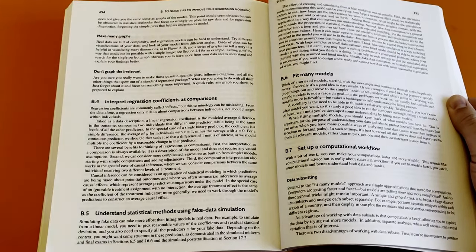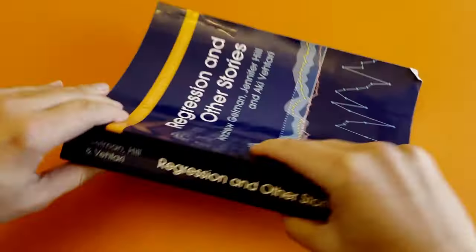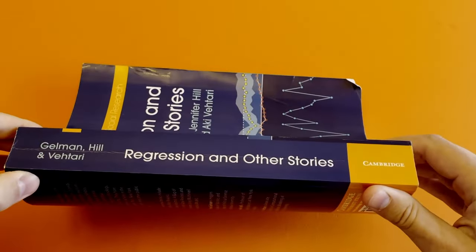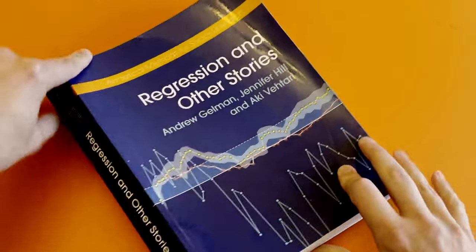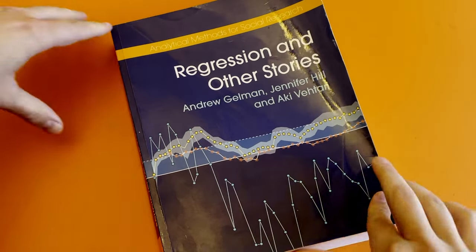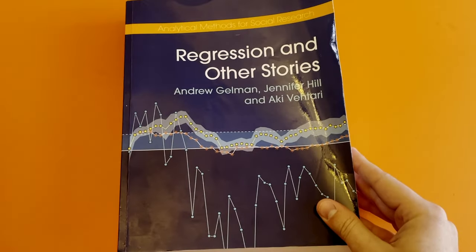In summary, Regression and Other Stories by Andrew Gelman is an essential desk reference for practitioners. It provides a comprehensive understanding of regression, benefiting even those working on non-regression models. This book is a must-have for every data scientist, enhancing efficiency and proficiency in data utilization. As a personal anecdote, those who understand regression better are better modelers in general. Thanks for watching, and we'll see you next time.